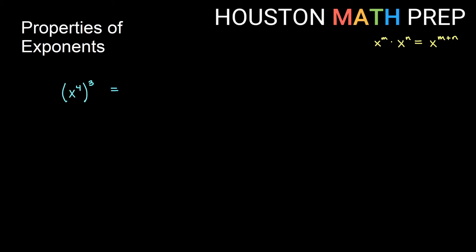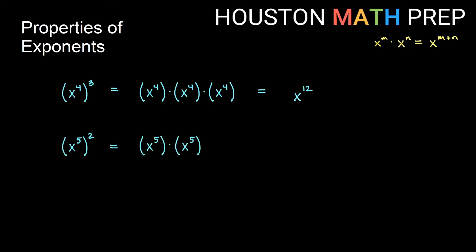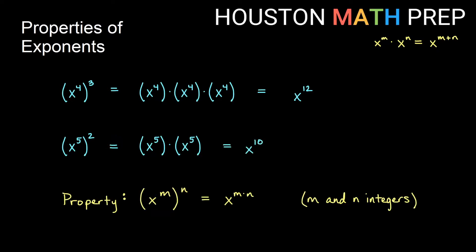Here we have x to the fourth all raised to the third power — a power of a power. Think of x to the fourth cubed as three copies of x to the fourth, each containing four copies of x, giving 12 copies total. Similarly, x to the fifth squared is two copies of x to the fifth, each with five copies of x, giving 10 copies total. So the property is: when you have an exponent on an exponent, multiply those exponents together.